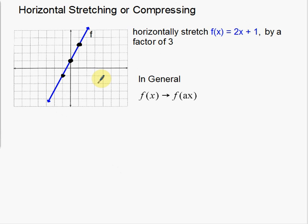When we horizontally stretch, horizontal means left and right, which is our x-axis. We're going to take these points and stretch them by a factor of 3, which means we're going to multiply the x-coordinates by 3. This point has an x-coordinate of 1, so if I stretch by a factor of 3, that x-coordinate changes from 1 to 3. So we've taken this point and moved it from an x-value of 1 to an x-value of 3.